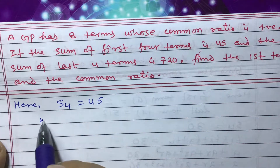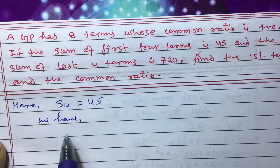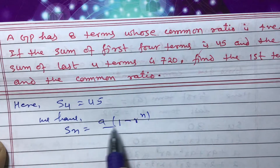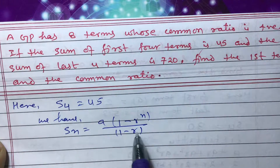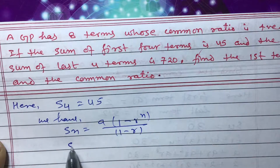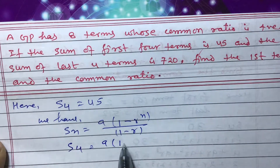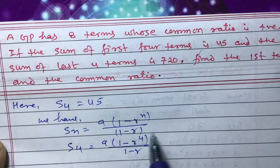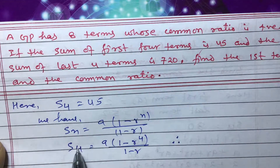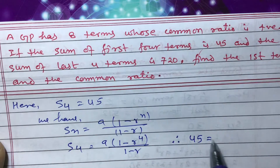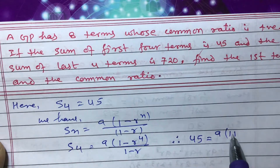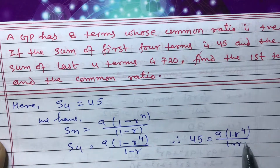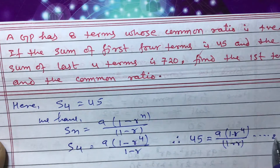We have the formula to find the sum of n terms: Sₙ = a(1 − rⁿ) / (1 − r). Now for four terms: S₄ = a(1 − r⁴) / (1 − r). Putting in the value, 45 = a(1 − r⁴) / (1 − r). This is equation 1.